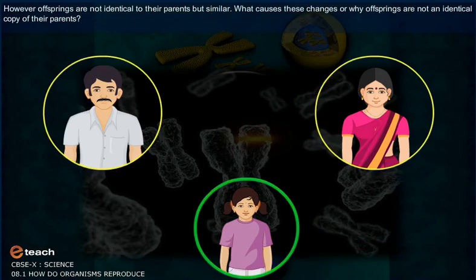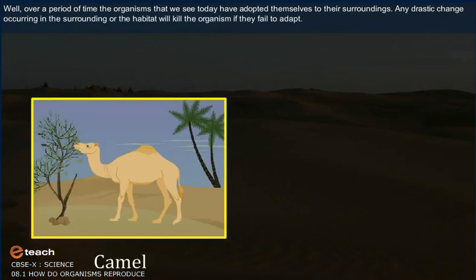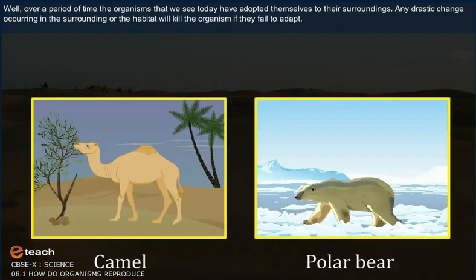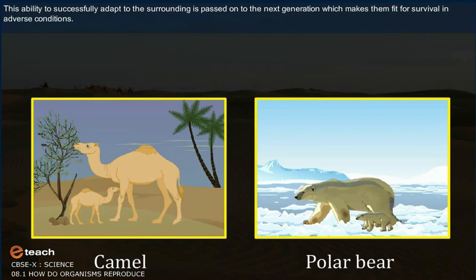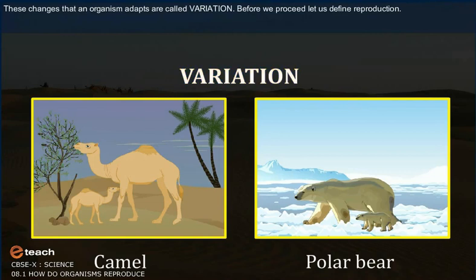What causes these changes, or why are the offspring not identical copies of their parents? Over a period of time, organisms have adapted themselves to their surroundings. Any drastic change in the surrounding or habitat will kill the organism if they fail to adapt. This ability to successfully adapt is passed on to the next generation, making them fit for survival in adverse conditions. These changes that organisms adapt are called variation.